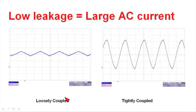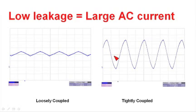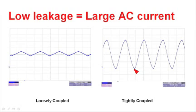Here we take a look at the current waveforms at the input of the power supply. The one on the left is the loosely coupled inductor; the one on the right is the tightly coupled inductor. In both cases, the DC current is the same — these are the same scales. But in the loosely coupled case, the input current has significantly less AC current than the tightly coupled case. This is because the voltage across the coupling capacitor shows up across the leakage inductance and creates a large AC current. This AC current has two impacts: it significantly increases the EMI, requiring much more EMI filter on the tightly coupled inductor.